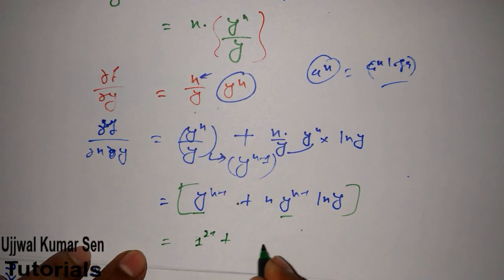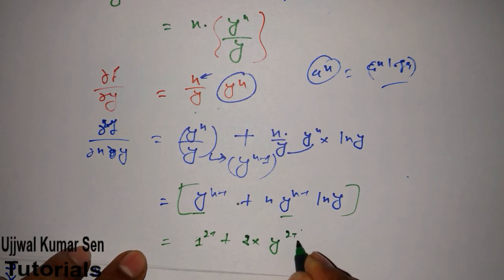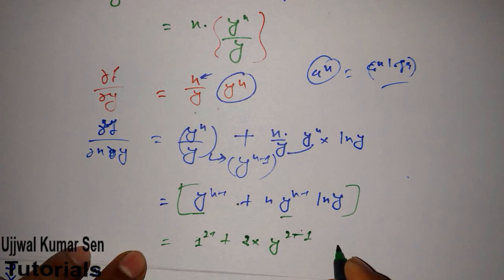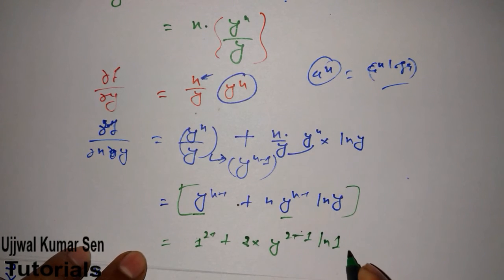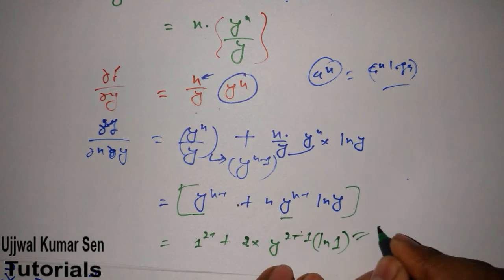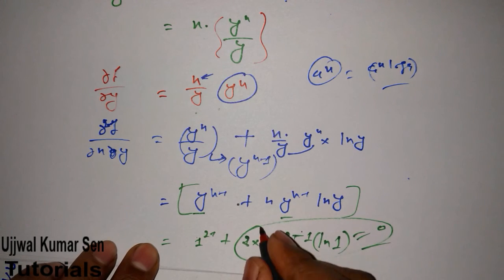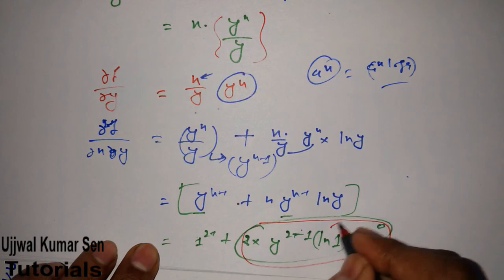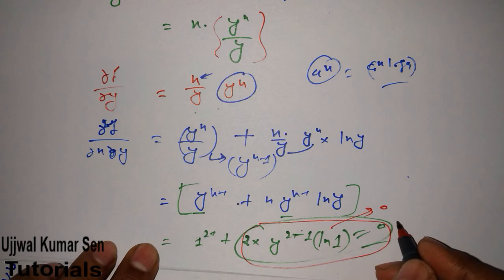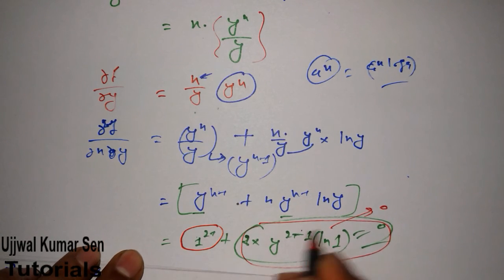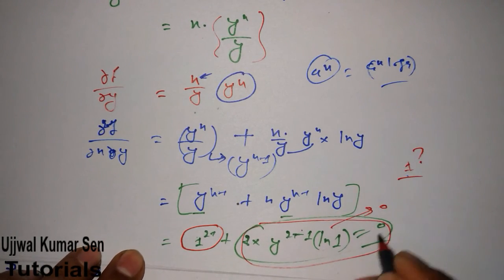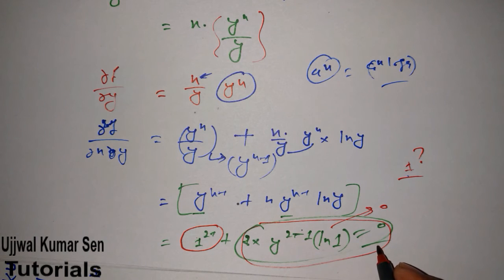x = 2, so y^(2-1), and here natural log 1. We know that log 1 equals 0, right? So this whole term becomes 0.